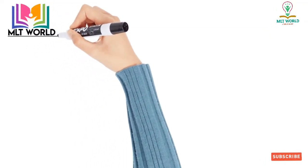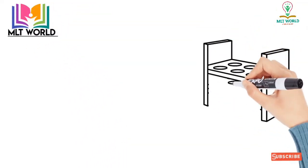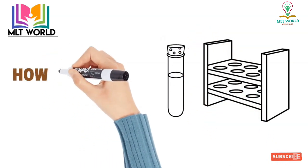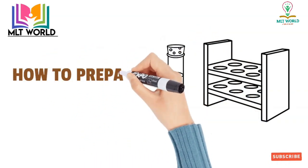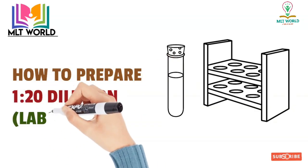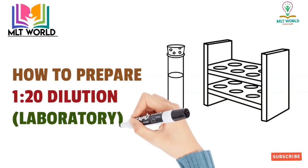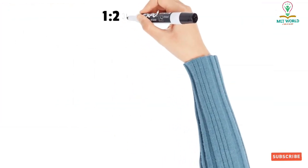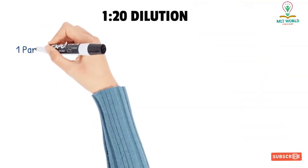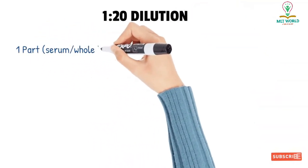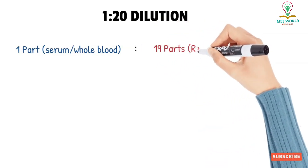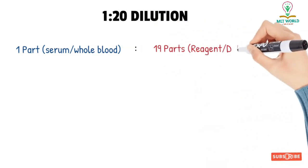Welcome back to MLT World. Today I will share how to make a dilution — one of the most common dilutions we use in routine work, which is the 1:20 dilution. This is used for WBC count, or when a value is coming very high and you need to decrease the sample quantity, or when your sample quantity is very little.